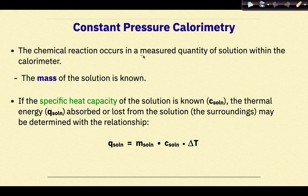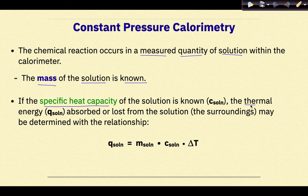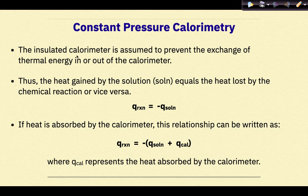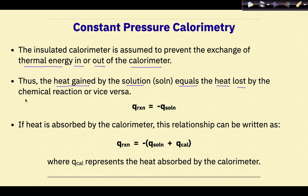The chemical reaction occurs in a measured quantity of solution within the calorimeter. The mass of the solution is known. If the specific heat capacity of the solution is known — little c solution — the thermal energy, q solution, either absorbed or lost from the solution, otherwise known as the surroundings, may be determined with the relationship: q solution equals mass of the solution times the specific heat of the solution times the change in temperature. The insulated calorimeter is assumed to prevent the exchange of thermal energy in or out of the calorimeter. Thus, the heat gained by the solution equals the heat lost by the chemical reaction and vice versa.